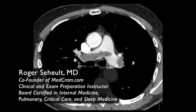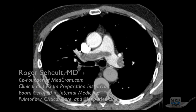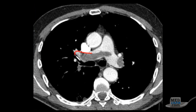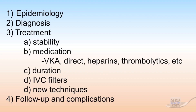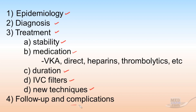Welcome to another MedCram lecture. We're going to talk about pulmonary embolism. As you can see on our CT scan, here is the embolus right in the middle of the pulmonary artery. The question is: why is it there, how did it get there, and what do we do about it? We're going to cover epidemiology, diagnosis, and treatment — including assessing patient stability, medication choices, duration, IVC filters, newer techniques, and complications.